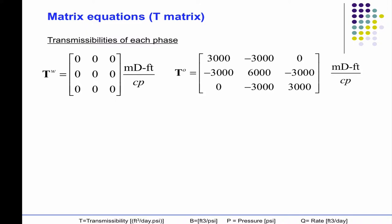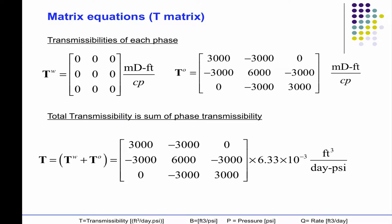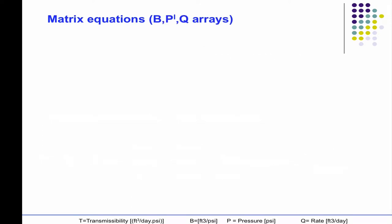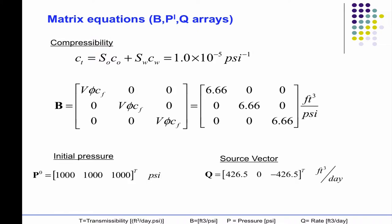So initially, at the first time step, these are your transmissibility matrices for water and oil. Of course, we're going to add them together to get this total transmissibility, the other matrix B, all of these other equations, the initial pressure, source vector.